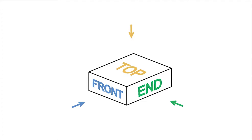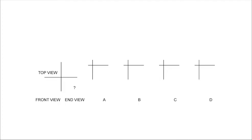Top front end problems ask you to examine an object from three straight on views: a top view, a front view, and an end view. In the problems, you're given two of those views and asked to interpret them and choose the correct third view from an array of options.